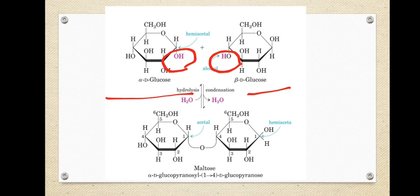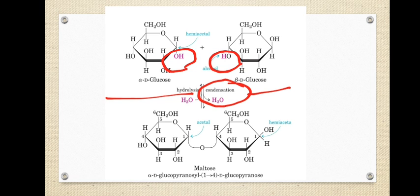Condensation is the process of removing a molecule of water. Across this bond, one OH from alpha-D-glucose and one H from beta-D-glucose are used to make a molecule of water that is removed. The oxygen remaining will then form a bond between the two glucose molecules.